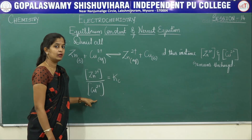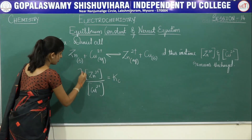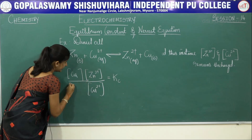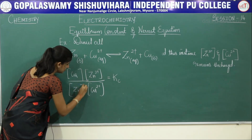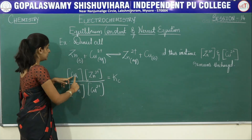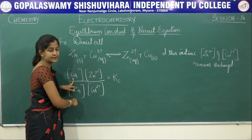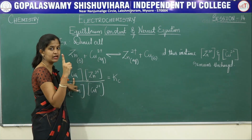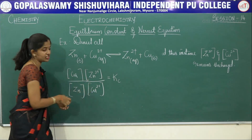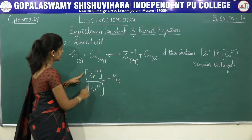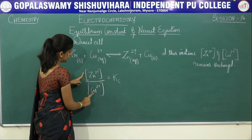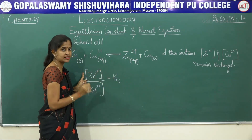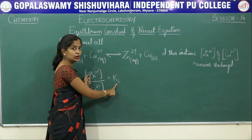That is product divided by reactant. You can also write copper divided by zinc here. I have not written the pure solid concentrations because the molar concentration of a pure substance — solid, liquid, or gas — is equal to 1. As a result, I have just taken the concentration of Zn²⁺ divided by concentration of Cu²⁺, which remains unchanged and is equal to Kc.